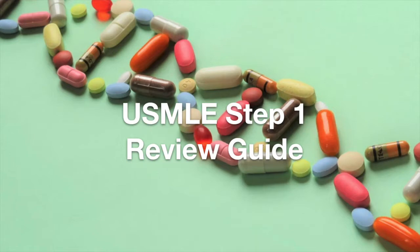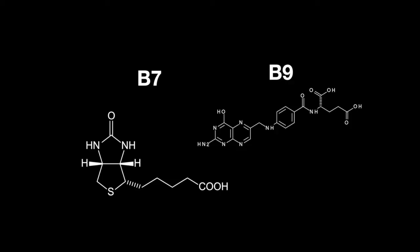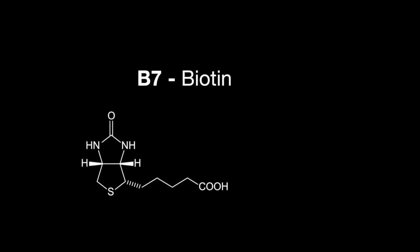Welcome to the Step 1 Review Study Guide. In this lesson, we learn about vitamin B7 and B9. Vitamin B7 is also called biotin. It acts as a cofactor for enzymes that add a one-carbon group, called carboxylation.